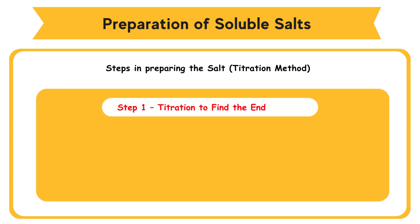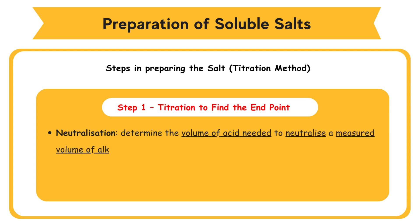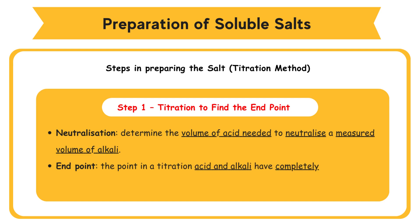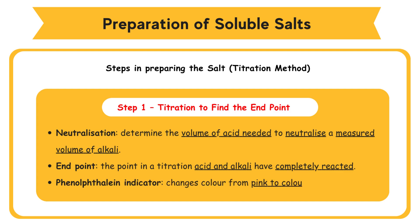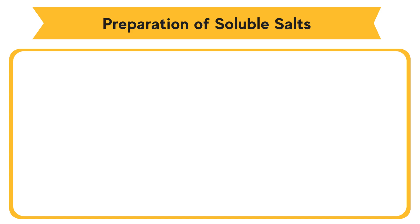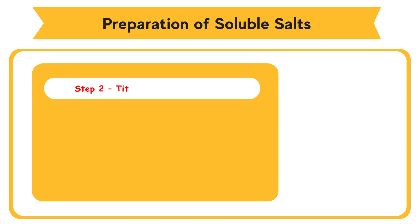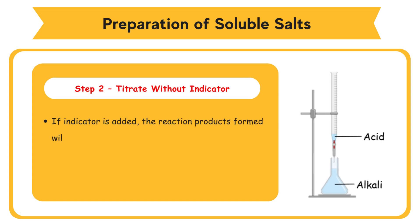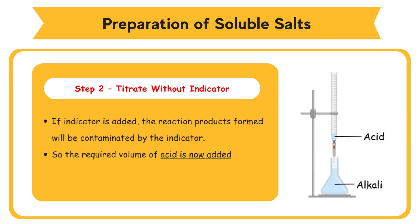Step 1 — Titration to find the endpoint. Neutralization is carried out to determine the volume of acid needed to neutralize a measured volume of alkali. The endpoint is the point in a titration at which the acid and alkali have completely reacted. The phenolphthalein indicator changes color from pink to colorless at the endpoint. Step 2 — Titrate without indicator. If indicator is added, the reaction products formed will be contaminated by the indicator. So the required volume of acid is now added to the same volume of alkali without using an indicator.